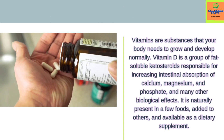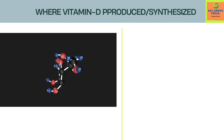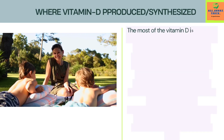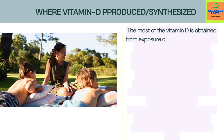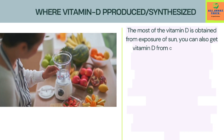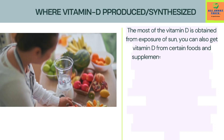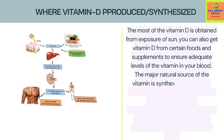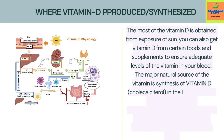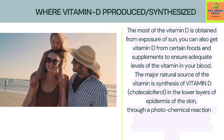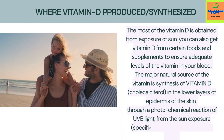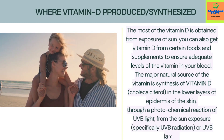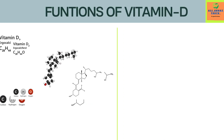Where is Vitamin D produced and synthesized? Most of the Vitamin D is obtained from exposure to the sun. You can also get Vitamin D from certain foods and supplements to ensure adequate levels of the vitamin in your blood. The major natural source is synthesis of Vitamin D colecalciferol in the lower layers of the epidermis of the skin through a photochemical reaction of UVB light from sun exposure, specifically UVB radiation or UVB lamps.